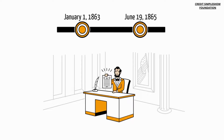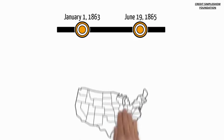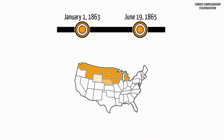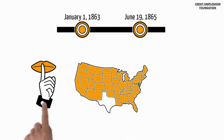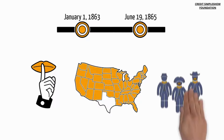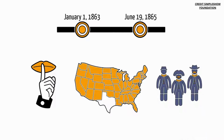Some say this was because news was slow to spread. Others say that the information was withheld from slaves, and others say that in some states there weren't enough Union soldiers to enforce the order.